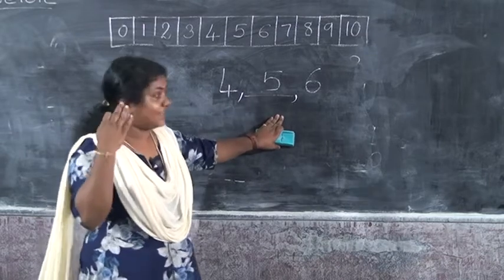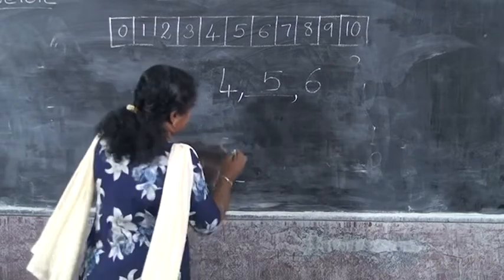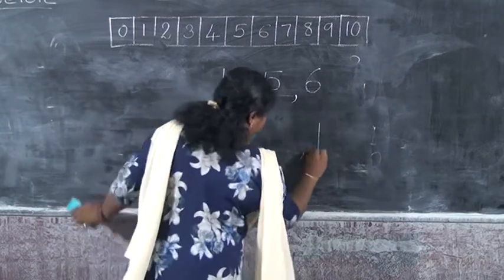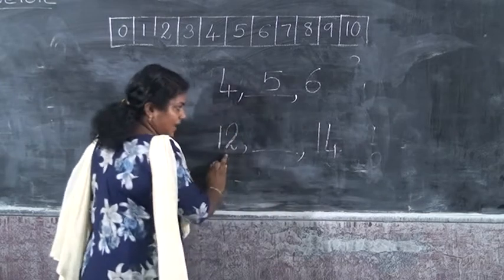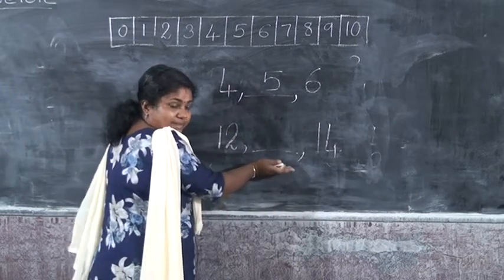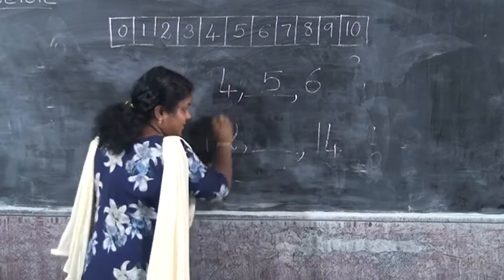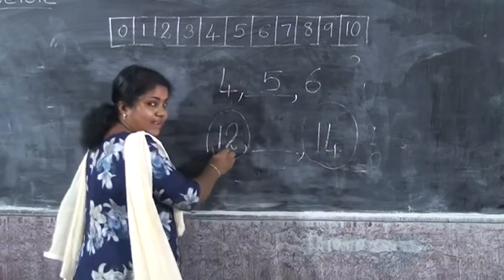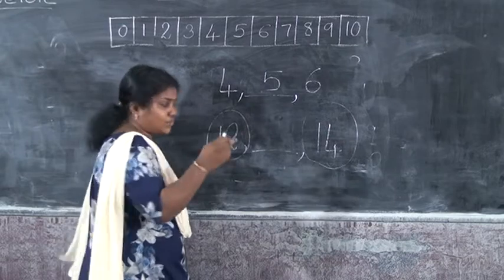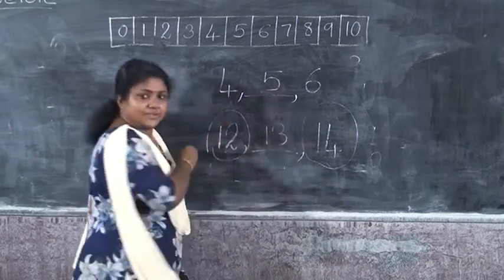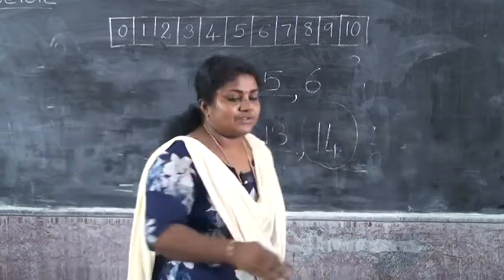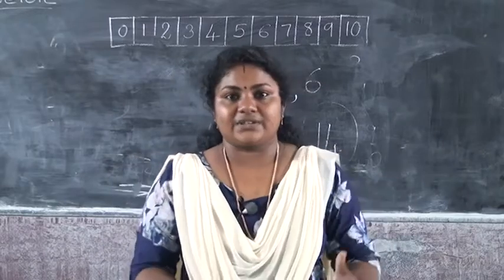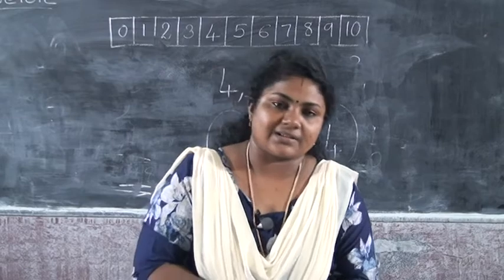We have to study two-digit between numbers. Here, I have written 12 and 14. In between 12 and 14, which number will come? After 12, that is 13. So 13 is the between number. You just write this in your notebook. We can look at more activities on between numbers in the next class.